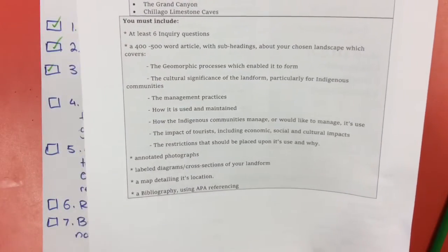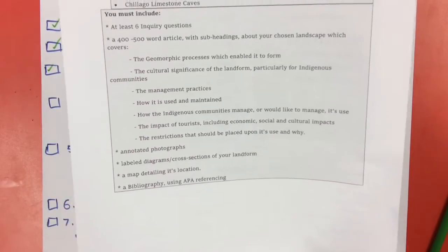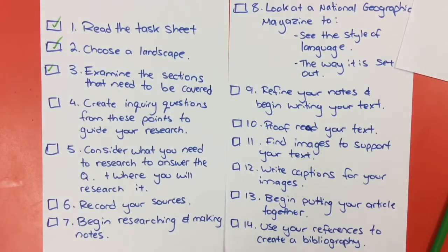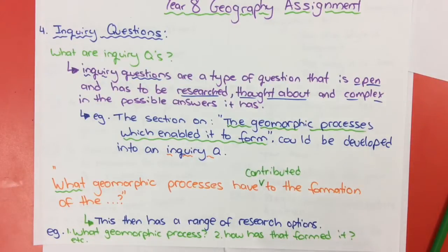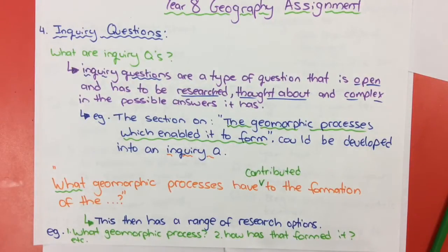You need to create six inquiry questions which are developed from these points. An inquiry question is one that is open and has to be researched, thought about, and complex in the possible answers it has. The section on geomorphic processes which enable it to be formed is one of the points you have to talk about on your task sheet. I can develop that into an inquiry question by putting something like 'what' or 'how' in front of it. For example: what geomorphic processes have contributed to the formation of whatever landscape you choose - something like Uluru maybe. The reason why that's an inquiry question is because it's complex; you have to think about it and research it to answer it. It's not one that you can give off the top of your head or give a one-word answer for.